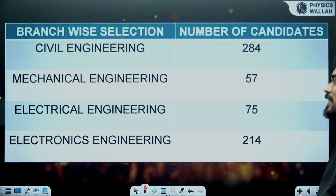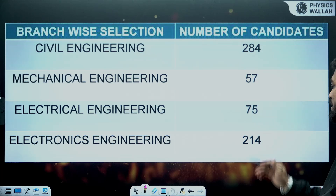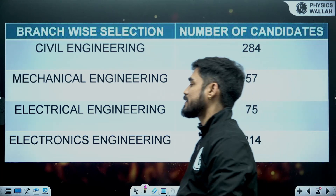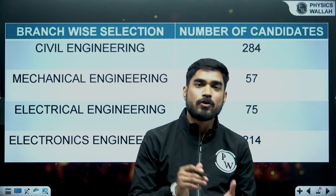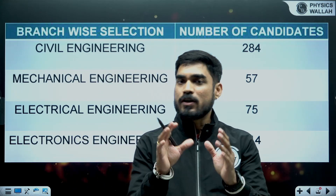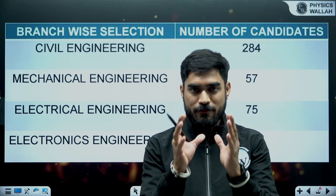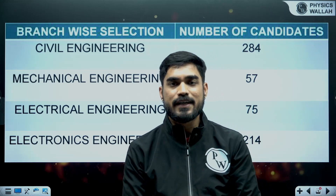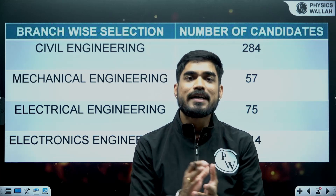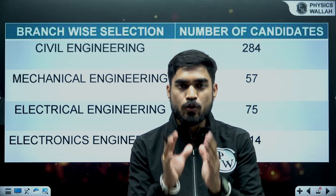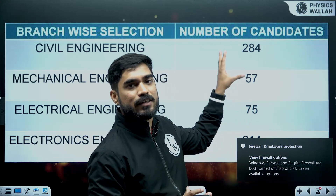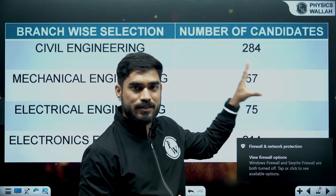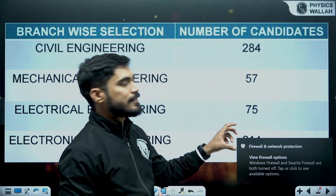75 students cleared in electrical and 214 students cleared in electronics. The final vacancy count works like this: UPSC selects 2.5 times the number of final vacancies after the mains exams.